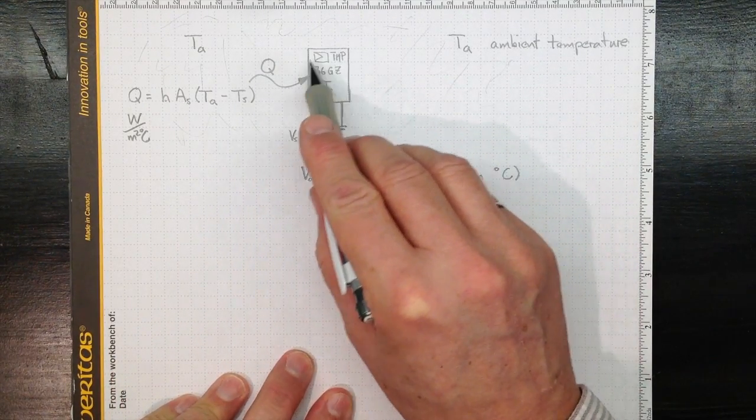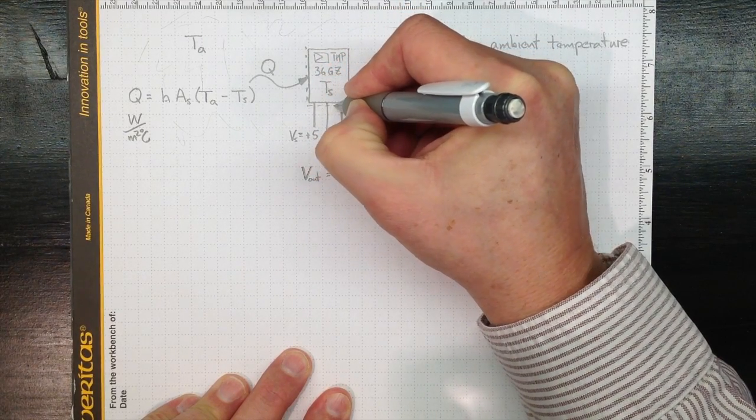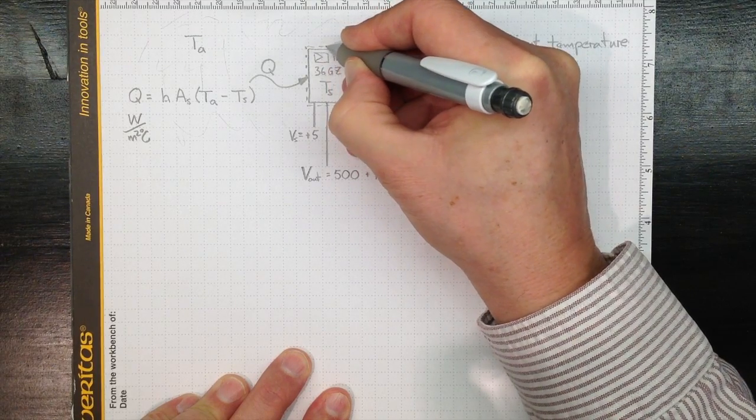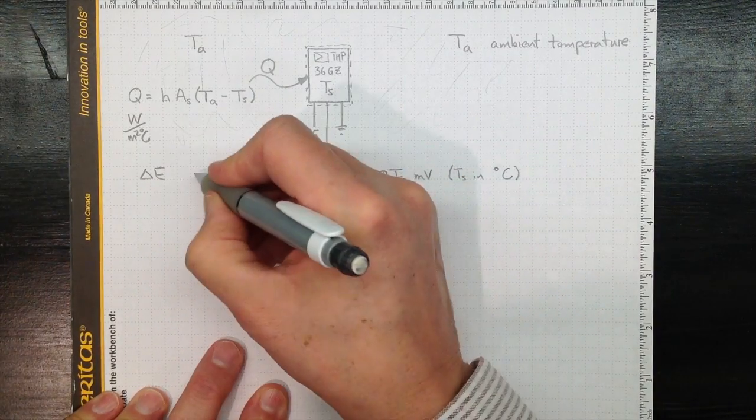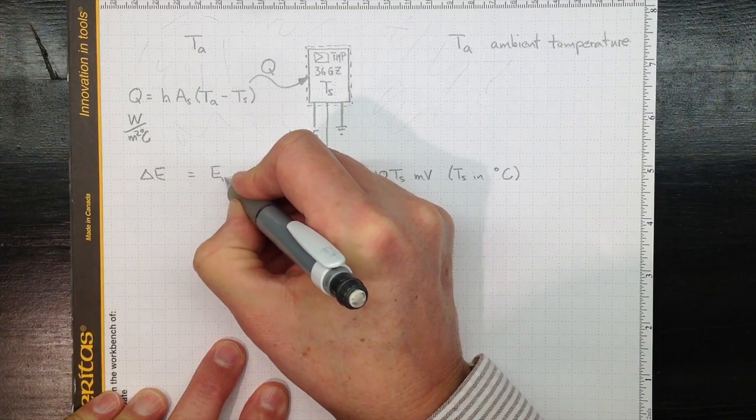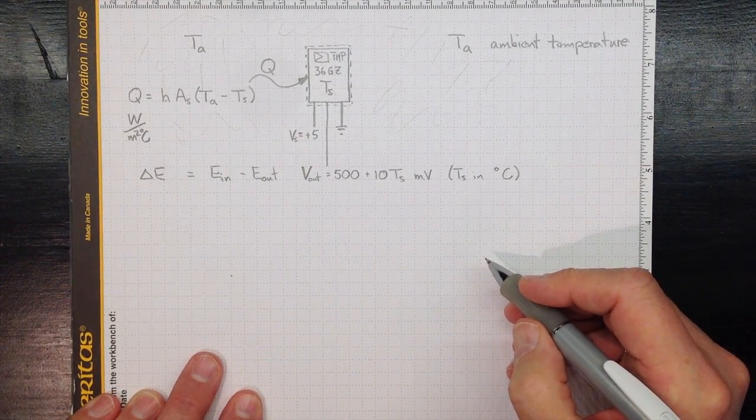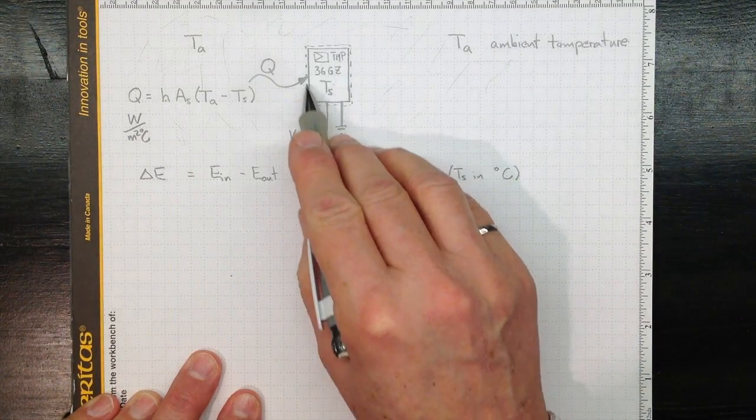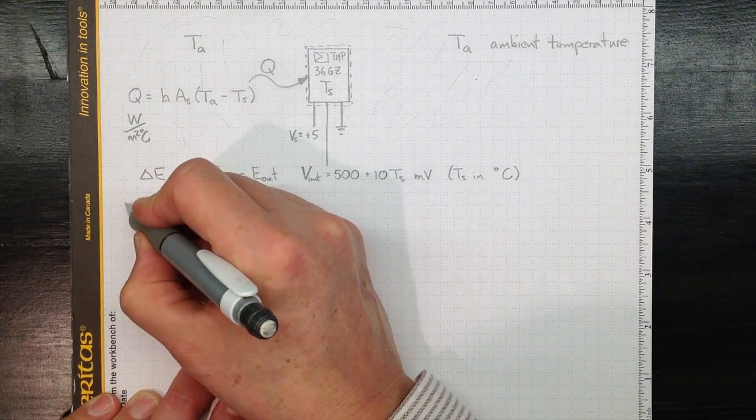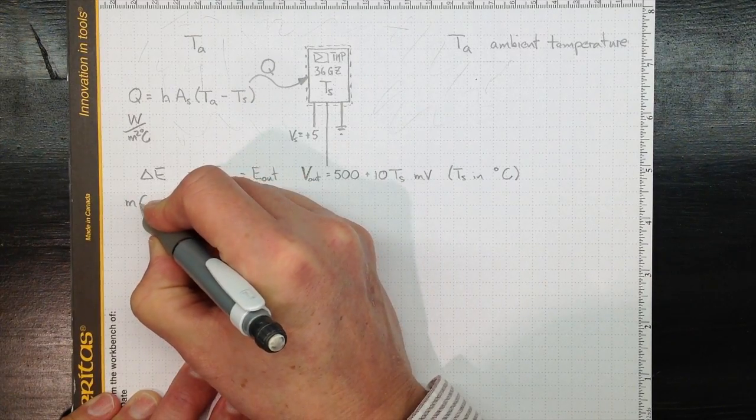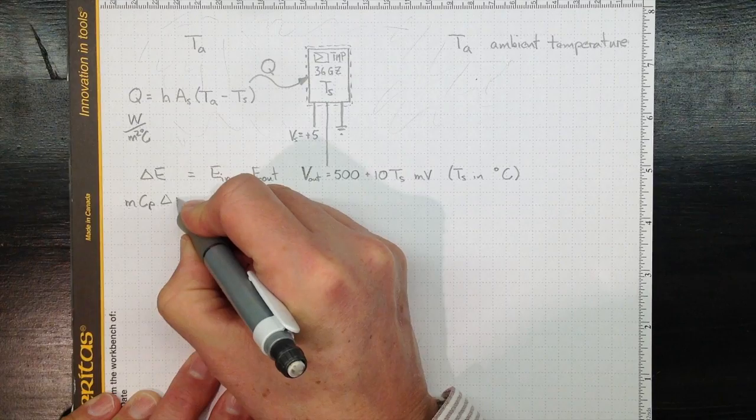Now if we want to know how quickly this warms up, we need to do an energy balance on a control mass. So we'll draw a little control mass boundary all around our TMP-36. And we can say that the change in energy inside that control mass must be equal to the energy in, however it goes in, minus the energy out. Energy that comes out no matter how it goes out. And the change in energy inside the volume here, if it's just sensible heat, we're not seeing any phase change or any of that weird stuff you dealt with in your thermodynamics course. Then the energy inside there will be the mass times the specific heat times the temperature, and the change in energy will be the mass times the specific heat times the change in the sensor temperature.